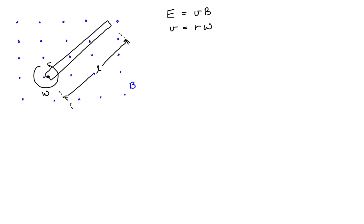The charges in this bar will be induced to separate into positive and negative charges. That separation is based on the direction of the magnetic force these charges experience. The magnetic force on a point charge equals the product of that charge and the cross product between the charge's velocity and the magnetic field. This magnetic force will cause the charges to separate in the direction of the force experienced.